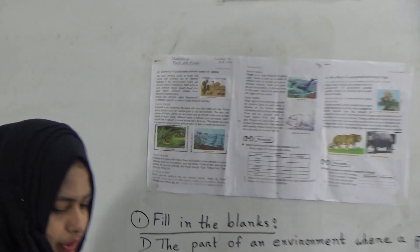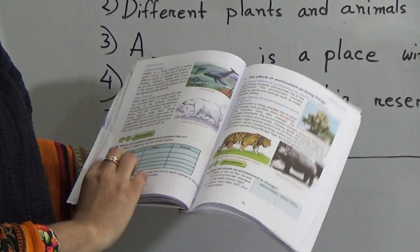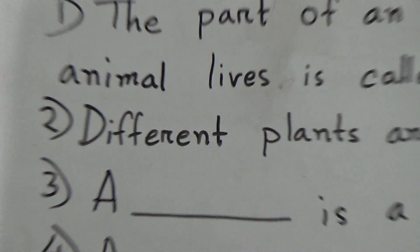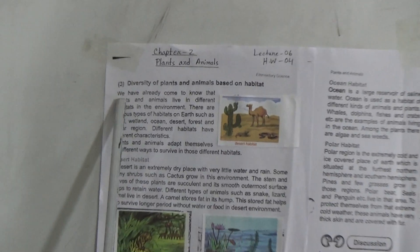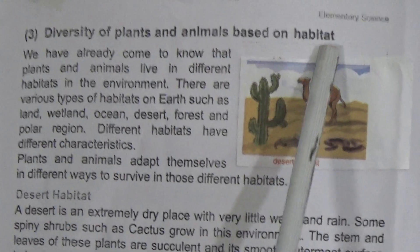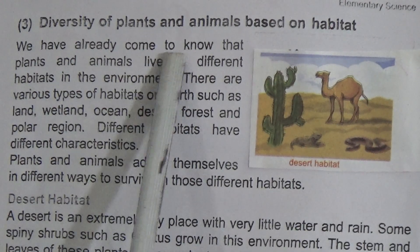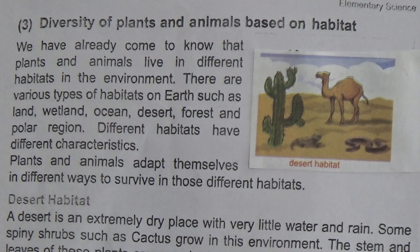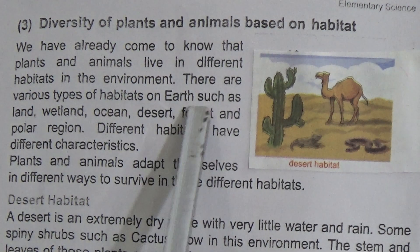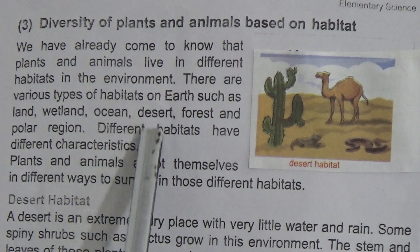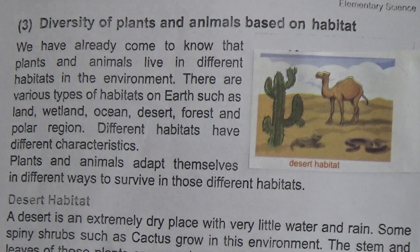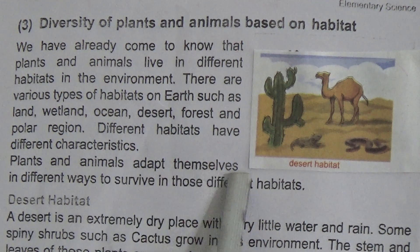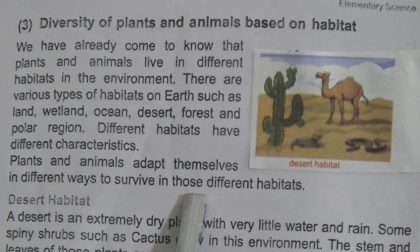Here is page number 17 in your book. The topic is diversity of plants and animals based on habitat. We have already come to know that plants and animals live in different habitats in the environment. There are various types of habitats on earth such as land, wetland, ocean, desert, forest, and polar region. Different habitats have different characteristics, and plants and animals adapt themselves in different ways to survive in different habitats.